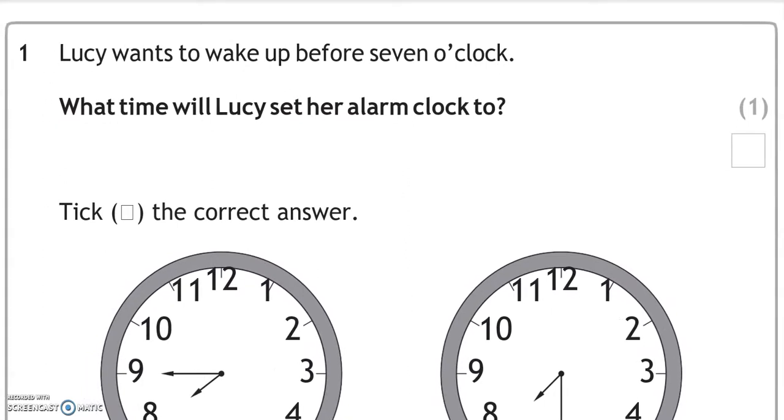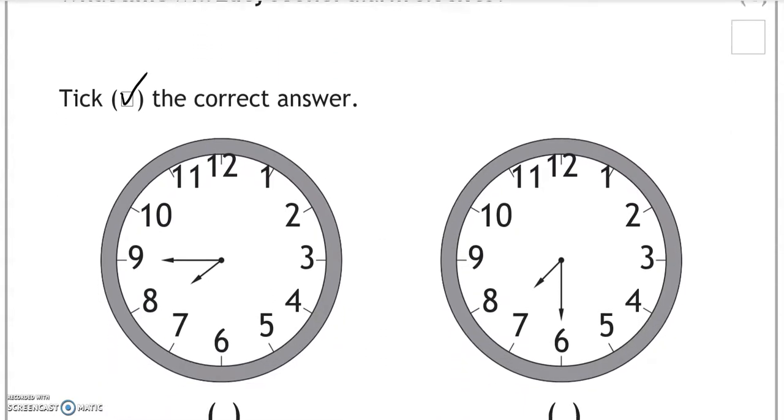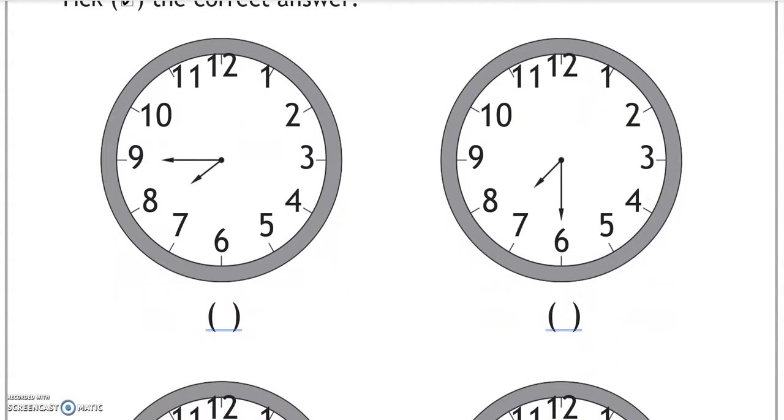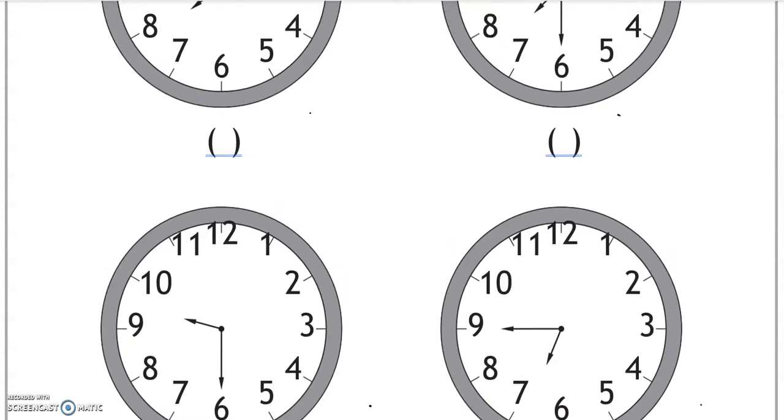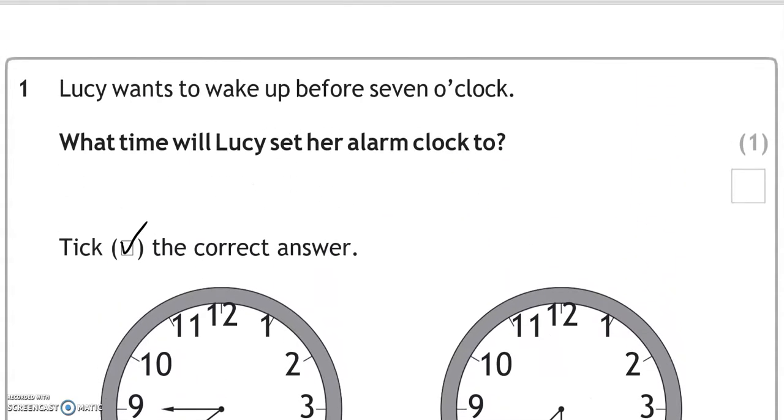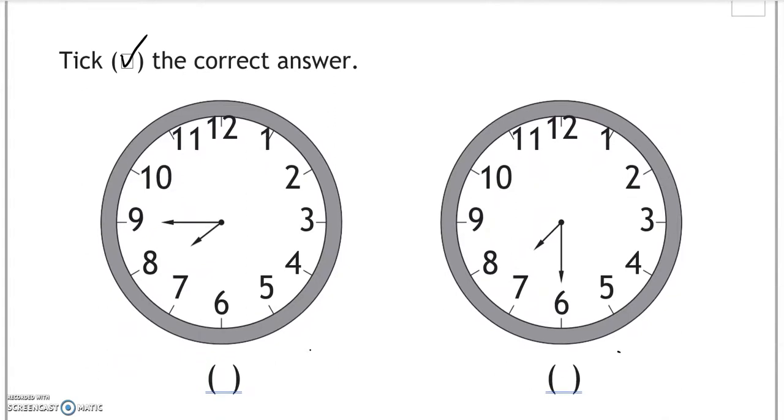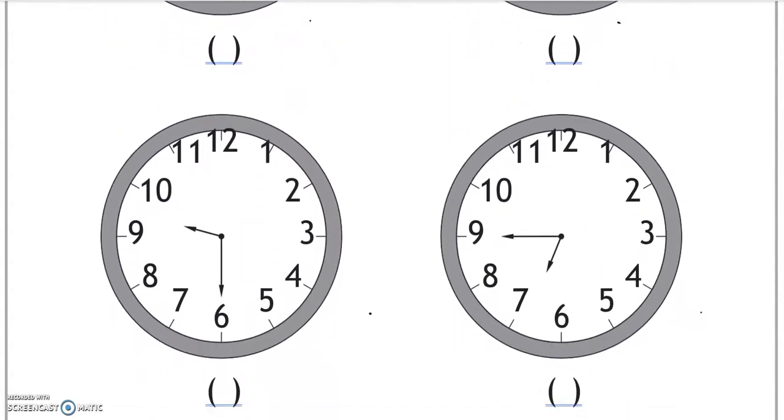Lucy wants to wake up before 7 o'clock. What time will Lucy set her alarm clock to? Tick the correct answer. So there is this one which is quarter to 8, we've got half past 7, half past 9, and quarter to 7. So we know that she wants to wake up before 7, so the only option that fits that criteria is the last one, because this is quarter to 7 before 7 o'clock.